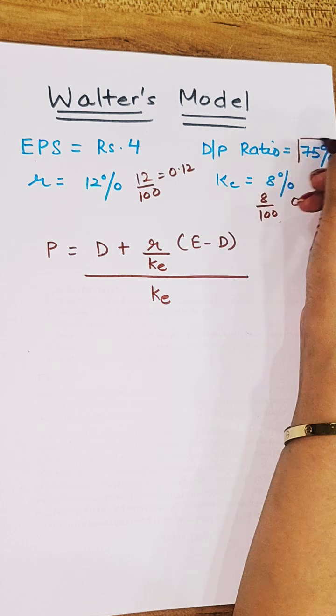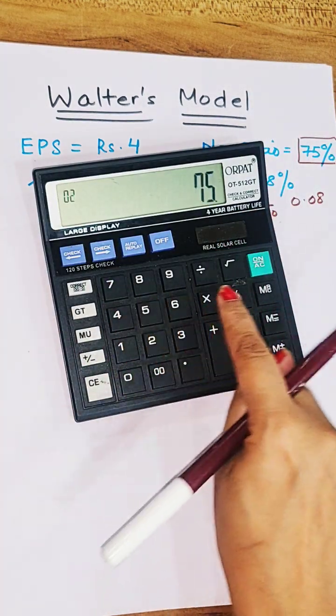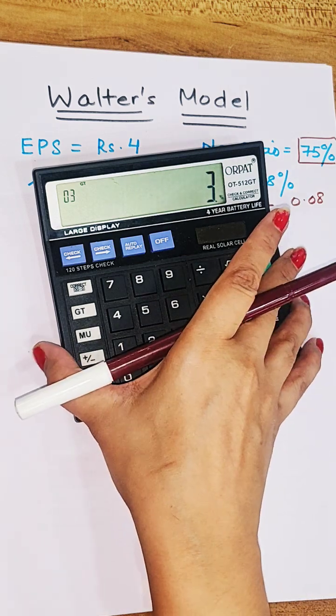D value is not given but we know DP ratio is 75%. So earning into 75% will be dividend per share.